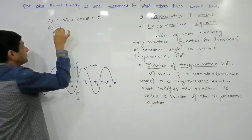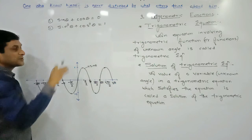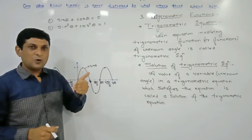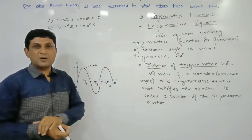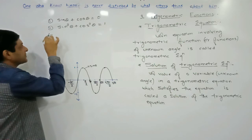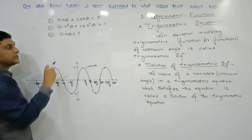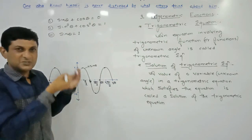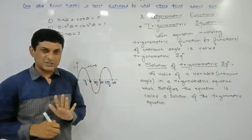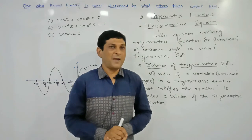Consider another example: the identity sin²θ + cos²θ = 1, which you have already proved. This is also a trigonometric equation. Any equation containing at least one trigonometric function is called a trigonometric equation. A simple example: sine θ equals 1 — one trigonometric function appears, so this is a trigonometric equation.